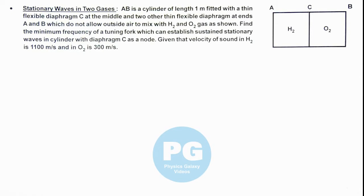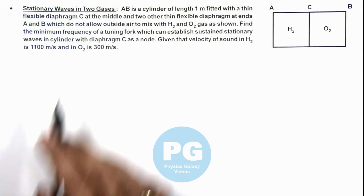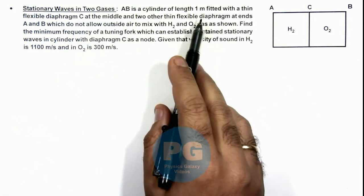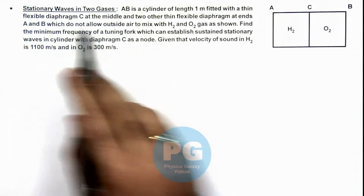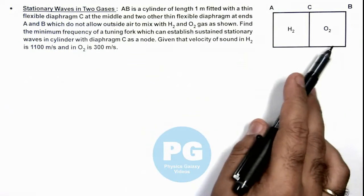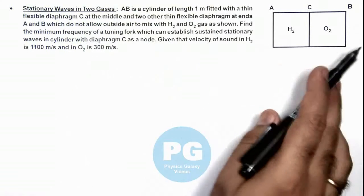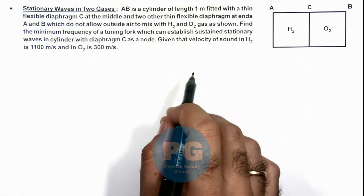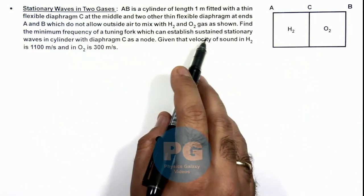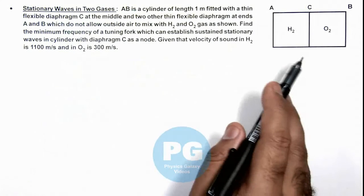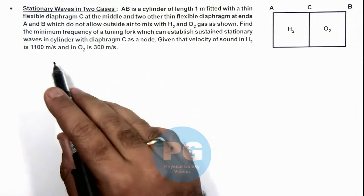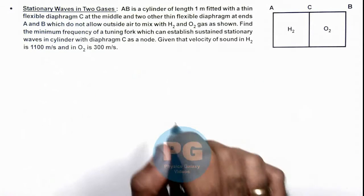In this illustration, we'll be discussing stationary waves in two gases. We are given that AB is a cylinder of length 1 meter, fitted with a thin flexible diaphragm C at the middle and two other thin flexible diaphragms at ends A and B, which do not allow outside air to mix with hydrogen and oxygen. We are required to find the minimum frequency of a tuning fork which can establish sustained stationary waves in the cylinder with diaphragm C as a node, given that the velocity of sound in hydrogen is 1100 and in oxygen is 300 meters per second.